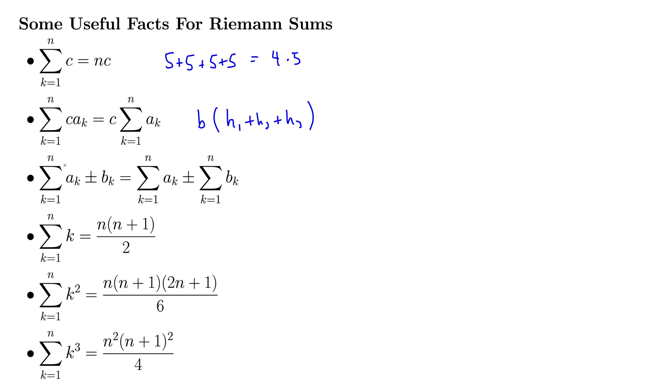This next one says that the sum, when we have a sum inside of the sum, so this is a k plus or minus b k, we can break that up as the sum of the a k's plus the sum of the b k's. And that's just a property for adding and subtracting, so we'd kind of expect that too. If this is plus as well, it would make sense that we could rearrange that a little bit. So that's the first three.